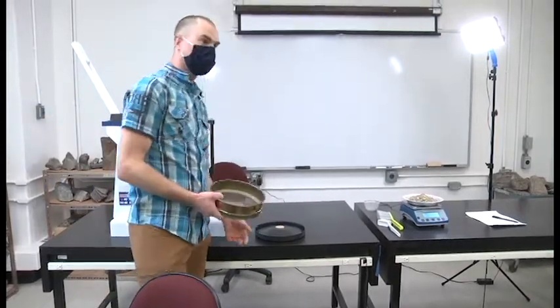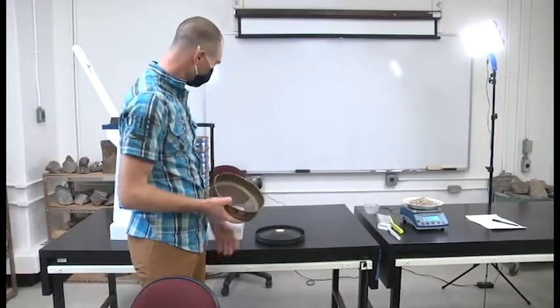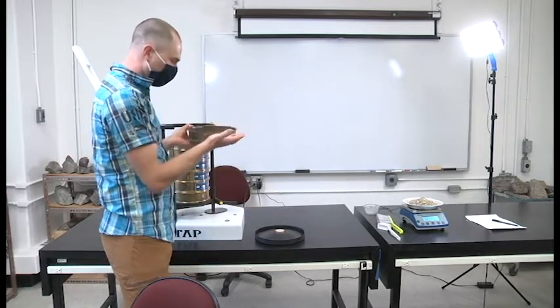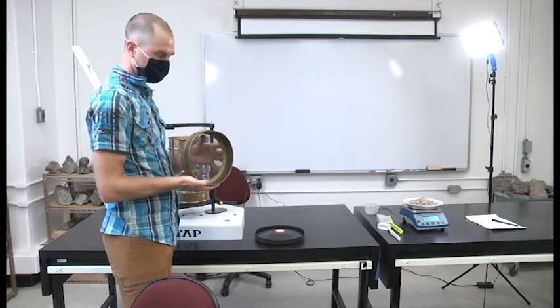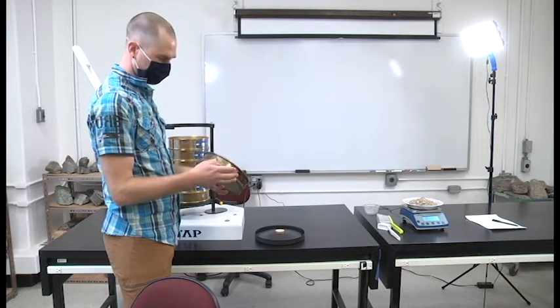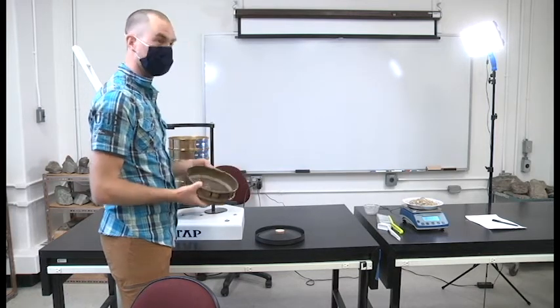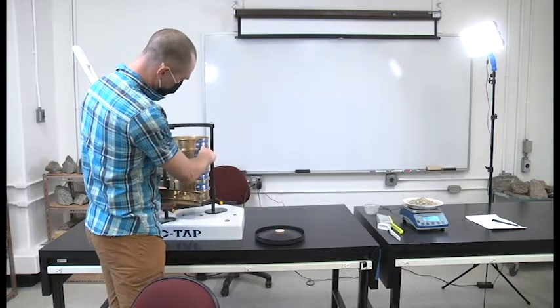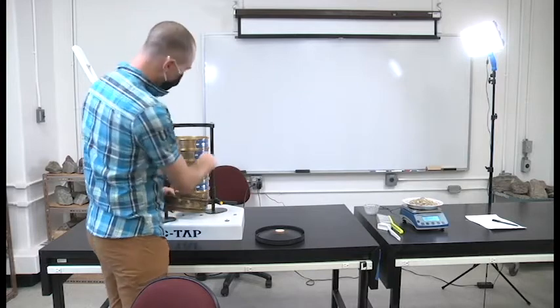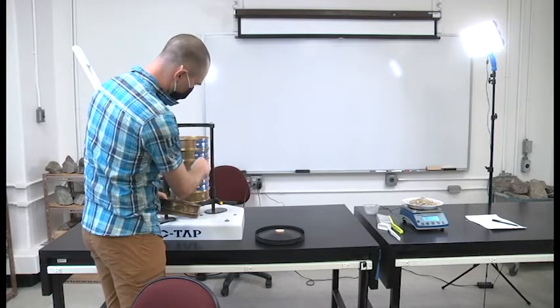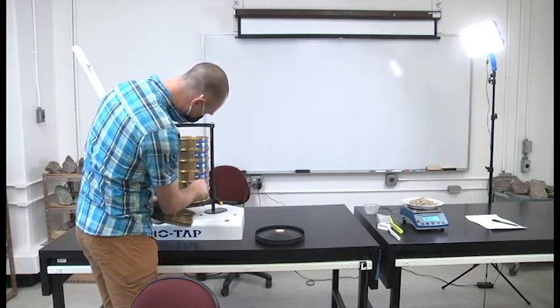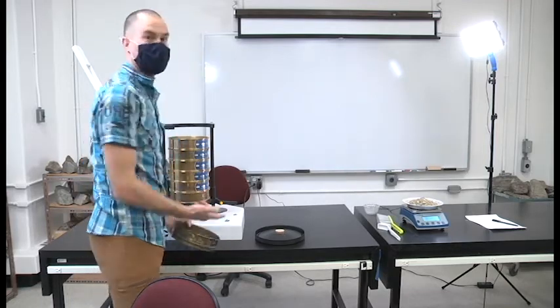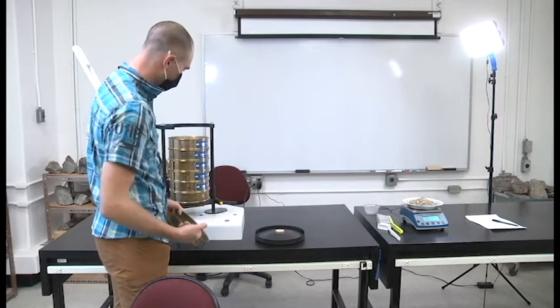The next step is to set up the sieve stack. It's very important that the stack of sieves goes from coarser to finer. You can see this is the number 4 sieve. The number 4 sieve is 4.75 millimeter particle size. As it goes down the stack, the sieve numbers increase: number 18, then number 40, then number 60, then number 200, and then the pan at the bottom.